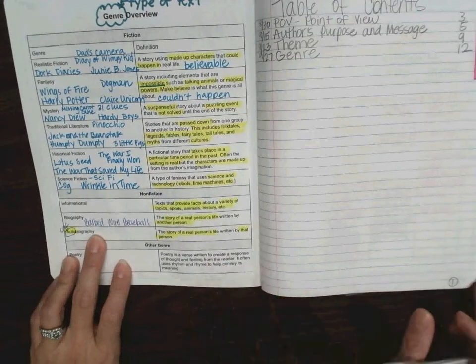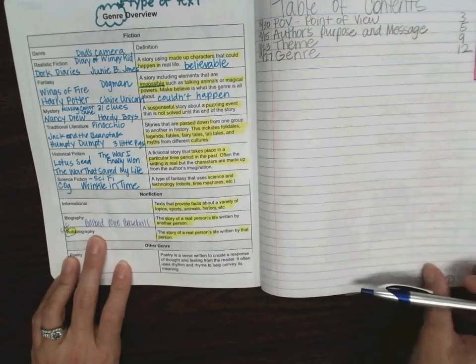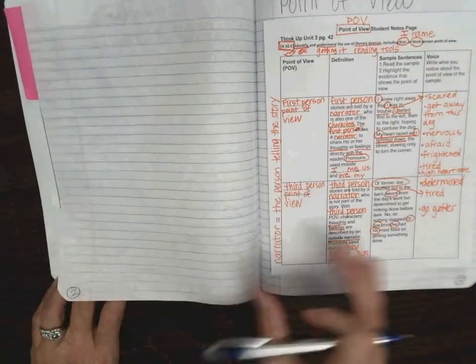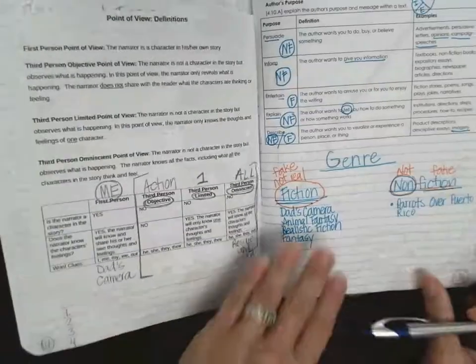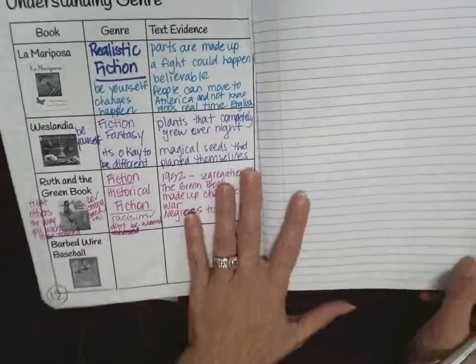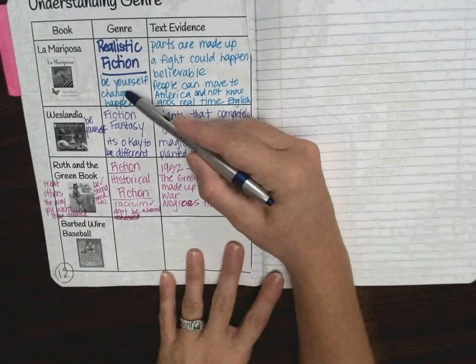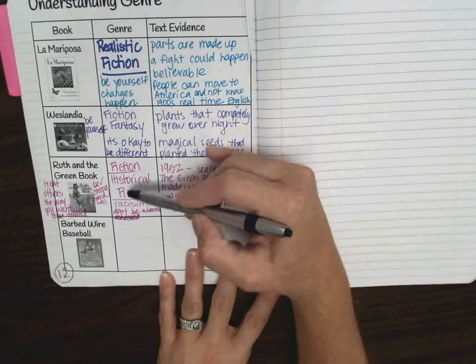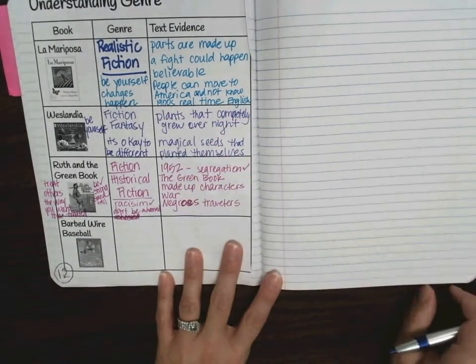Alright, so then, and if I'm ever moving too fast, just hit pause. So we're going to move to our notes page, where we've read La Mariposa, Westlandia, Ruth and the Green Book, and now today, Barbed Wire Baseball.